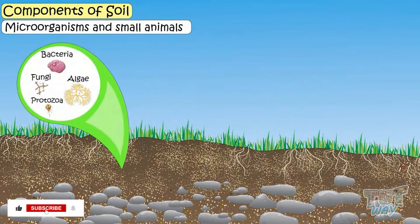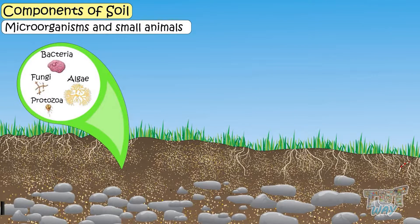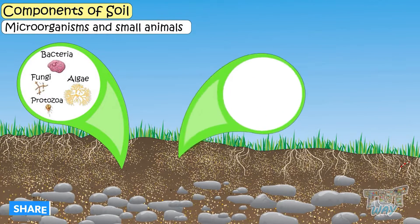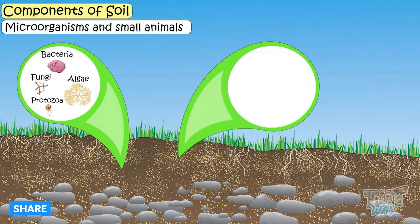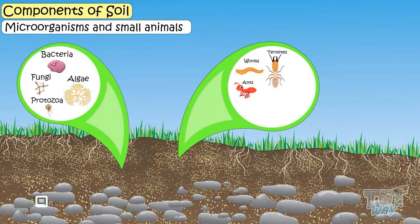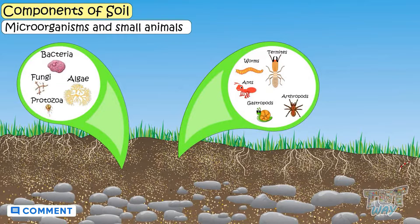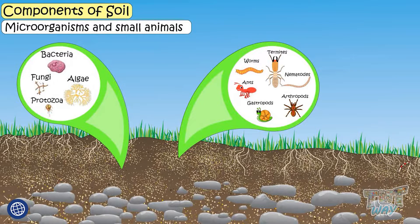Microorganisms and small animals — small living organisms like worms, ants, termites, gastropods, arthropods, and nematodes are found in the soil.